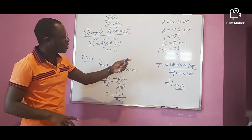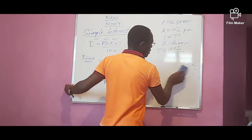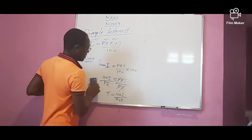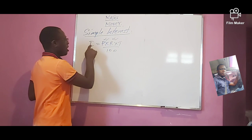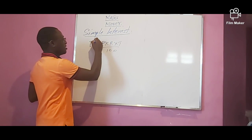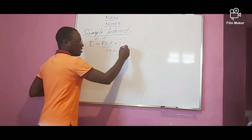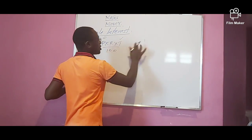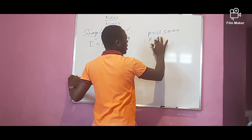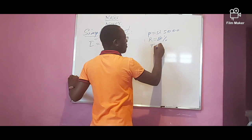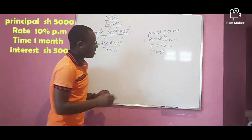Now let's look at the next type of question, where you are asked to calculate the rate. You have interest, you have principal, you have time, but you don't have the rate. Using the same reference values: principal is 5,000, time is one month, and interest is 500. We don't know the rate.